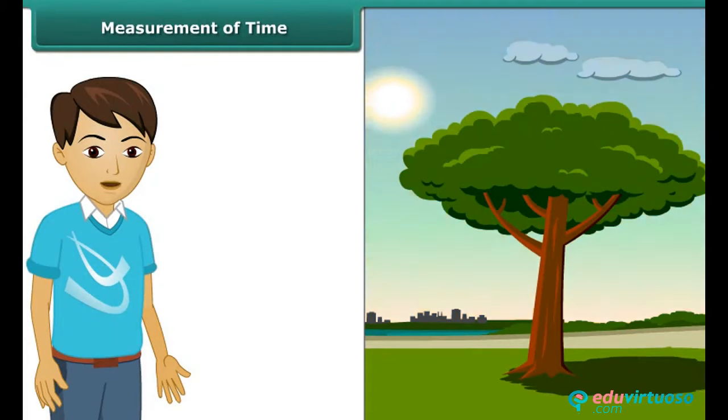Have you ever wondered how our elders could tell the approximate time of the day by just looking at the shadows? Many events in nature repeat themselves after definite intervals of time.